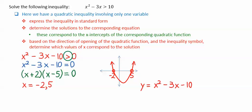We then look at the inequality symbol. In this case, it is a greater than zero. This means it corresponds to the portion of the graph that is above the x-axis. We then have the portion on the left side corresponding to x less than negative 2 and the portion on the right side corresponding to x greater than 5.